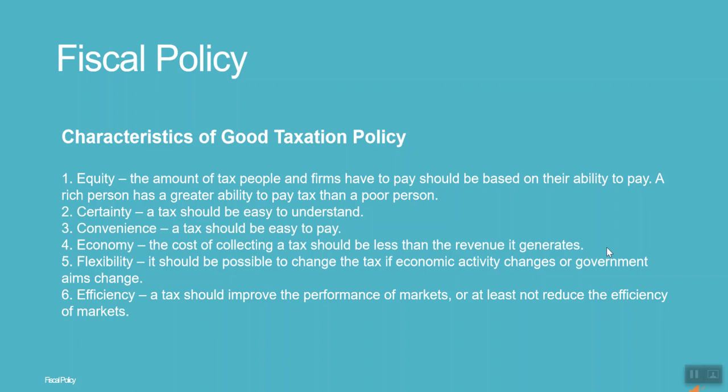Third, Convenience — a tax should be easy to pay. Fourth, Economical — the cost of collecting a tax should be less than the revenue it generates. Fifth, Flexible — it should be possible to change the tax if economic activity or government aims change. Sixth, Efficiency — a tax should improve the performance of markets.